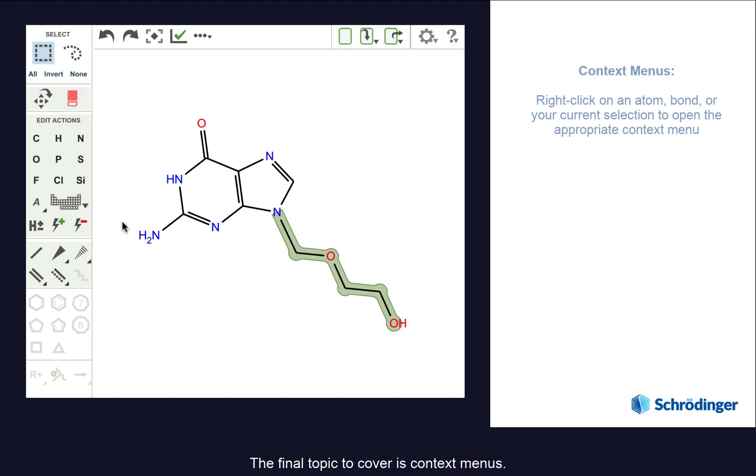The final topic to cover is context menus. Right-clicking on a single bond or atom opens the appropriate context menu. On a trackpad, you can use a two-finger click to open the context menu.